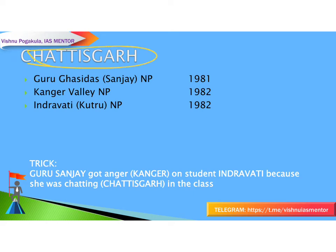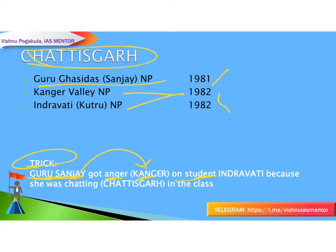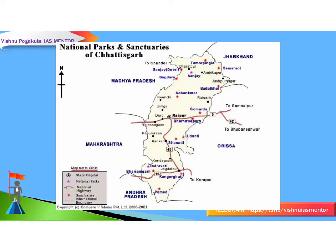The trick to remember Chhattisgarh national parks: Guru Ghasidas was established in 1981, and Kanger Valley and Indravati in 1982. The story is: there is a guru named Sanjay — Guru Ghasidas — who got angry (remember 'Kangar' as anger) at a student named Indravati, because she was chatting in class — 'chatting' helps you remember Chhattisgarh. So: Guru Sanjay got anger on student Indravati. The map shows Guru Ghasidas (Sanjay) National Park, Indravati National Park, and Kanger Valley (Kanger Ghati) National Park.